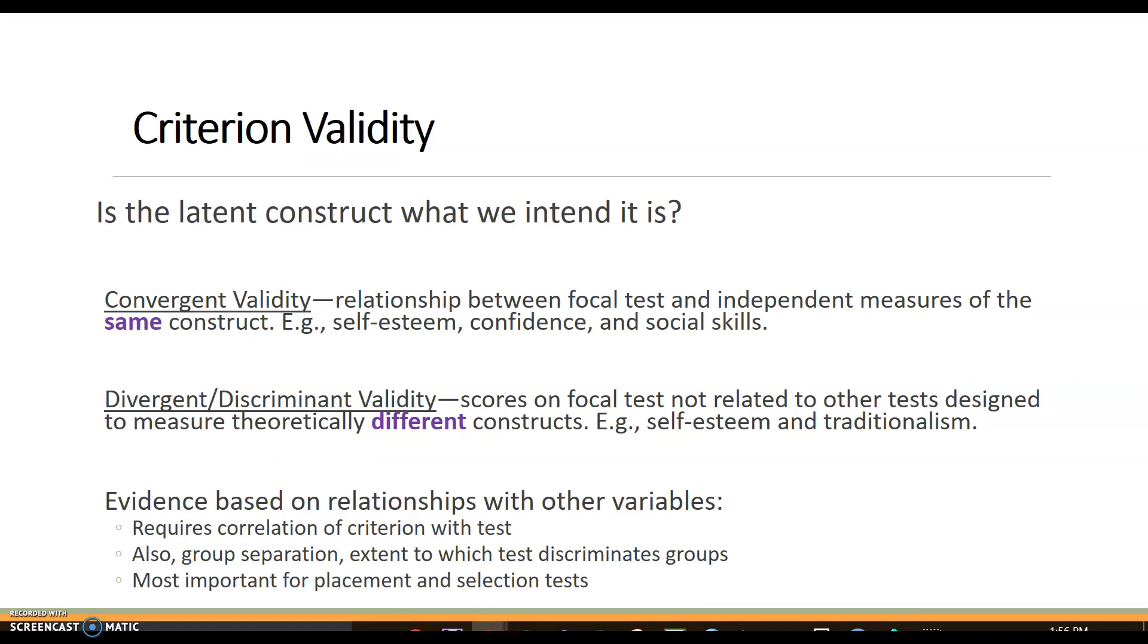Criterion validity is really thinking about the latent construct and is it what we mean it to be? So does it converge with the similar items? Does it diverge with different items? And that's where the sub-aspects of convergent and divergent validity come into play.